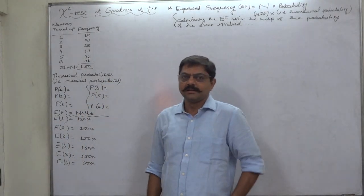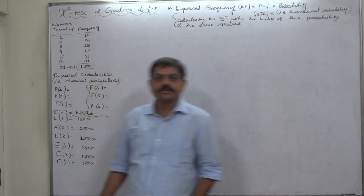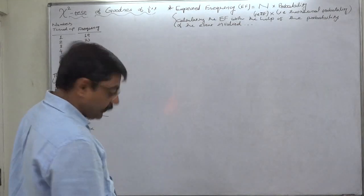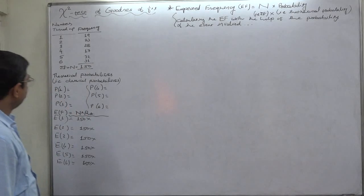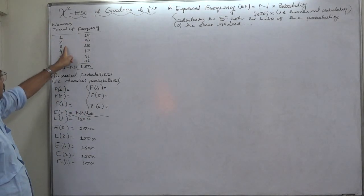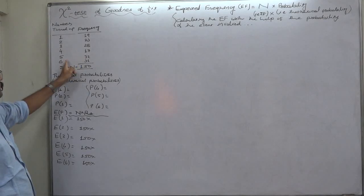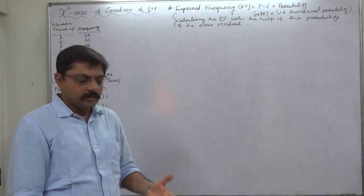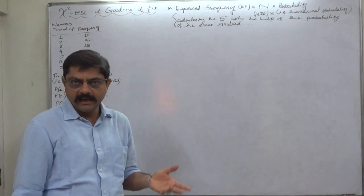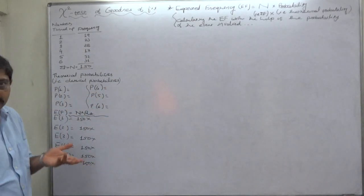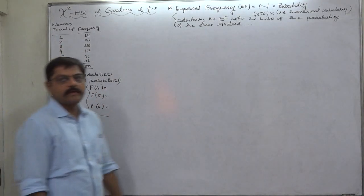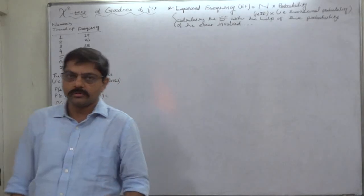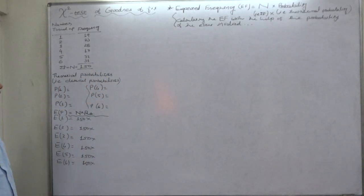Hello, Namaskar and welcome friends. One more case in Chi-Square test of goodness of fit. The case this time is a die is thrown 150 times with the following results: number turned up 1 nineteen times, 2 twenty-three times, 3 twenty-eight times, 4 seventeen times, 5 thirty-two times, 6 thirty-one times. The experiment is throwing a die, tossing a die and getting the result or recording the result. We know that the possible outcomes are 1, 2, 3, 4, 5, or 6.